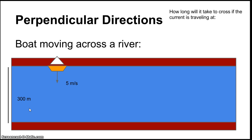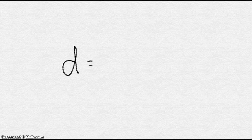The first thing we want to make sure you understand is how perpendicular directions are related. When two dimensions are perpendicular — meaning at right angles to each other — their motions are independent of each other. The boat-across-the-river example is often used to illustrate this point. If a boat is traveling across a river at five meters per second and the river is 300 meters across, how long does it take to cross?